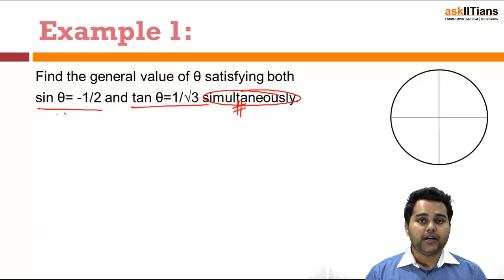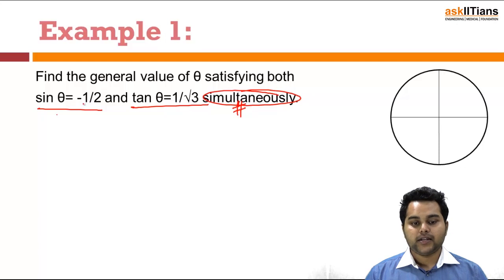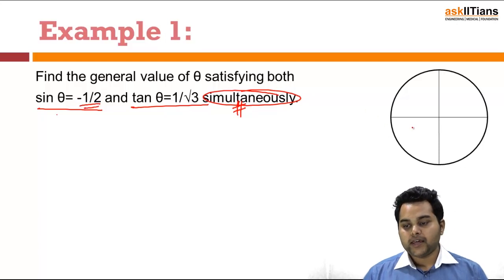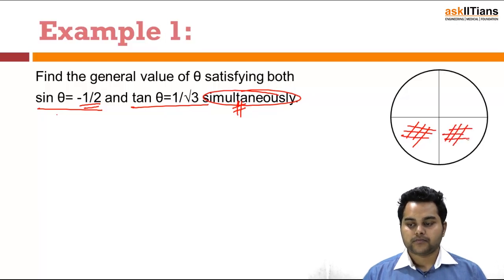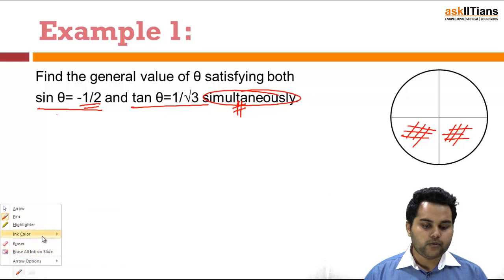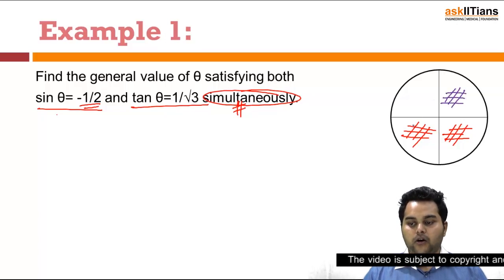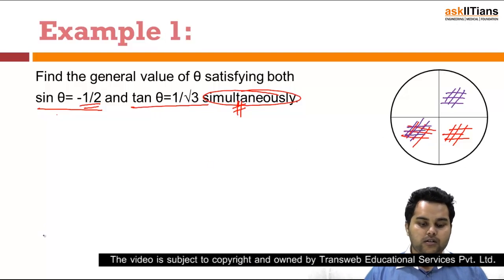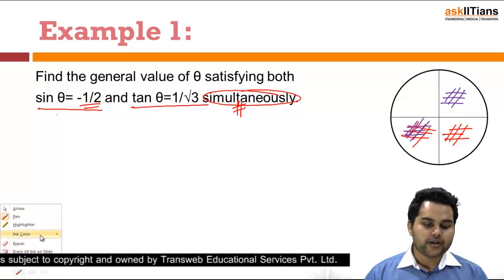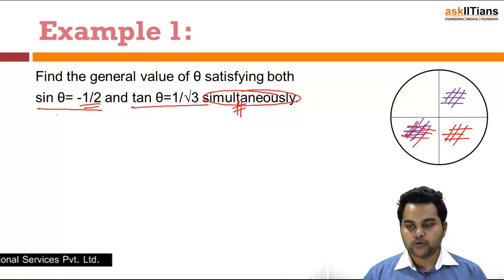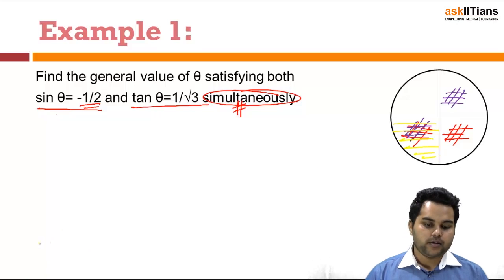First we try to locate superficially the quadrants in which the solution may lie. Sin θ being negative here would lie either in the third quadrant or in the fourth quadrant. Whereas looking at the second equation, tan θ = 1/√3 being positive shall lie either in the first quadrant or in the third quadrant. So the overlapping region of the two solutions would be the third quadrant, where my solution shall lie.